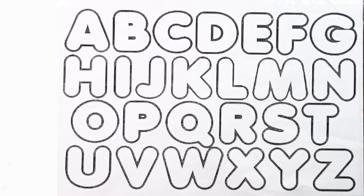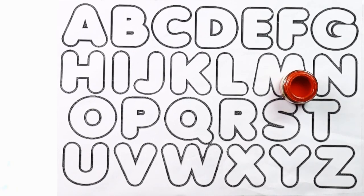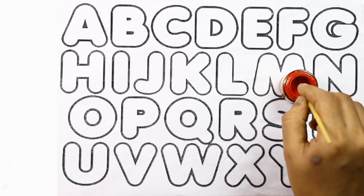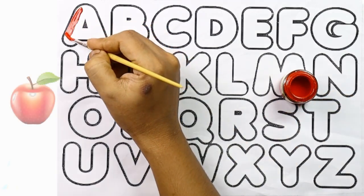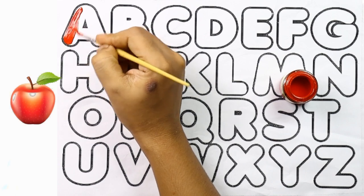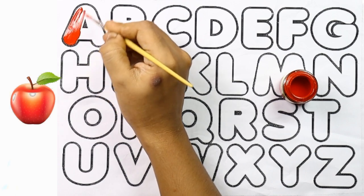Hello, kids! Let's learn English alphabets with colors. First, we'll learn the letter A. I'm coloring letter A with red color. A for Apple.